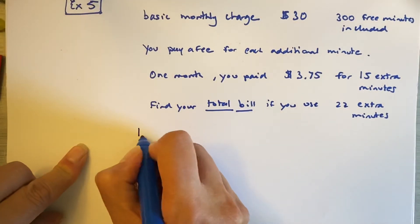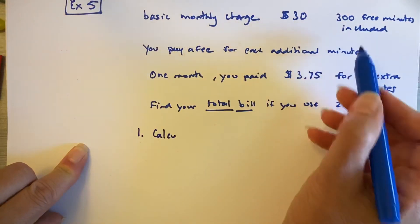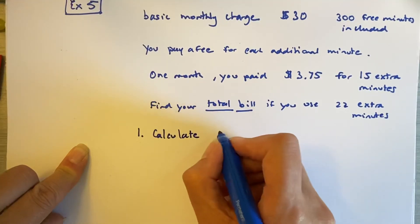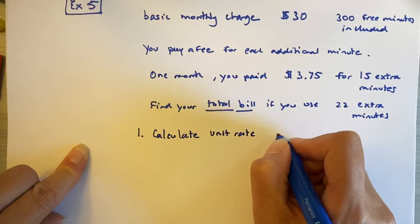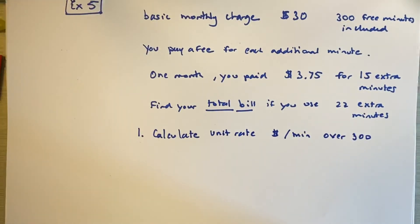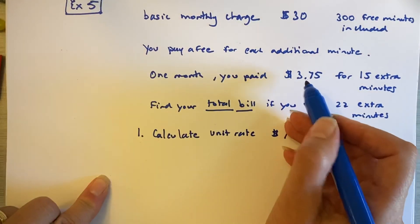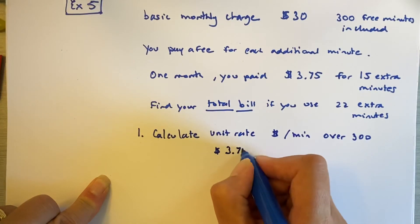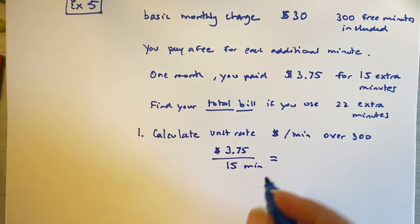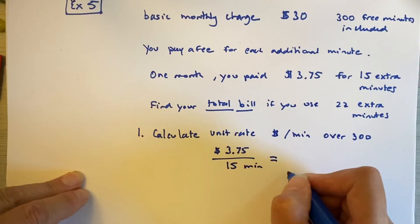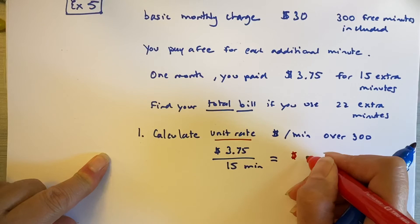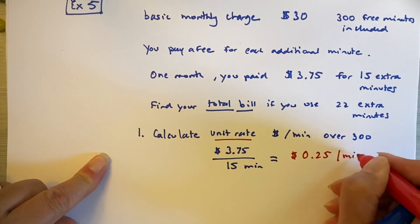How are you going to find out? Well, first, you need to calculate the unit rate. You'll notice at the beginning of the problem, they didn't tell you how much per minute you get charged when you get over 300 minutes. So the first thing you need to do is know what that number is. So calculate the unit rate, which is dollars per minute over the 300. Do you have enough information to do that? Well, yes, because you were told the first month you paid $3.75, and that was for 15 extra minutes. And so if you work out this problem, and you divide $3.75 by 15 minutes, you get the unit rate. You're going to calculate that the dollars per minute extra that they charged you is 25 cents per minute more.